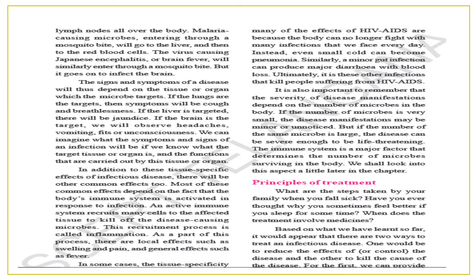It is also important to remember that the severity of disease manifestations depends on the number of microbes in the body. If the number of microbes is very small, the disease manifestation may be minor or unnoticed. But if the number of the same microbes is large, the disease can be severe enough to be life-threatening. The immune system is a major factor that determines the number of microbes surviving in the body.